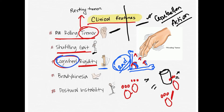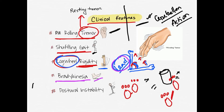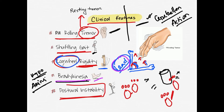There is also bradykinesia, which means slow movements, and this may progress to akinesia — absence of movement. In late stage disease, postural instability occurs, where the patient cannot maintain balance and may fall. Postural instability is an important late-stage feature.